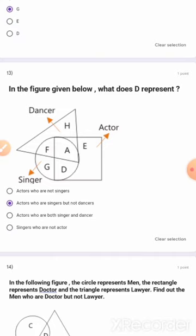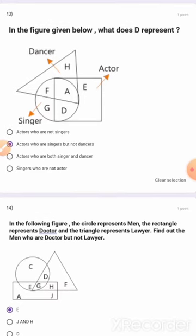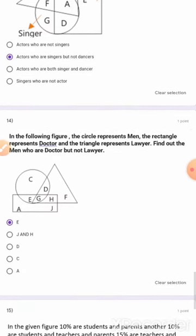In the figure given below, what does D represent? D is located in both circle and square. It means actor as well as singer. 14th question: In the following figure, circle represents men, rectangle represents doctor.